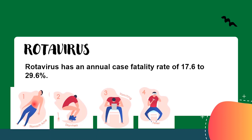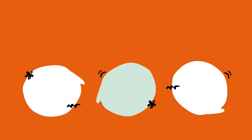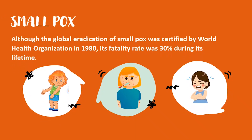Rotavirus has an annual case fatality rate of 17.6–29.6%. Smallpox: Although the global eradication of smallpox was certified by the World Health Organization in 1980, its fatality rate was 30% during its lifetime.